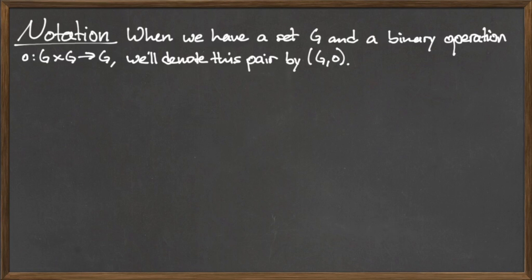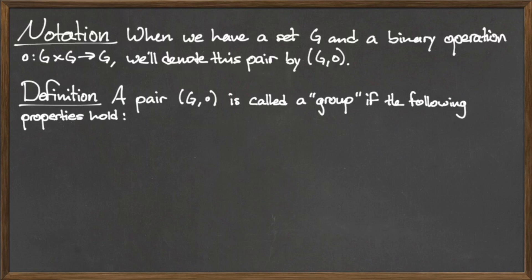This pair G dot is called a group if the following properties hold. Property 1 is the identity property. The set G must contain an identity element E with respect to the binary operation dot.